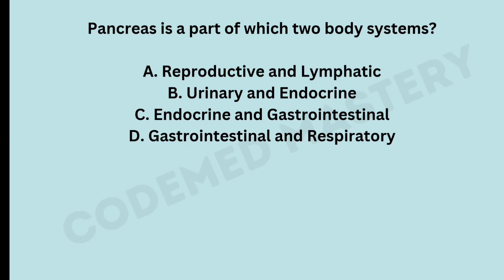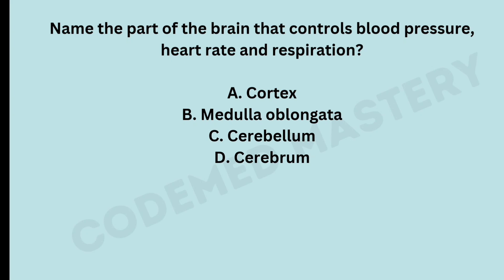Pancreas is a part of which two body systems? Option A: reproductive and lymphatic. Option B: urinary and endocrine. Option C: endocrine and gastrointestinal. Option D: gastrointestinal and respiratory. The right answer is option C, endocrine and gastrointestinal. The pancreas functions as an endocrine gland by producing hormones such as insulin and glucagon, which regulate blood sugar levels. It is also part of the gastrointestinal system, acting as an exocrine gland producing digestive enzymes that help break down food in the small intestine.